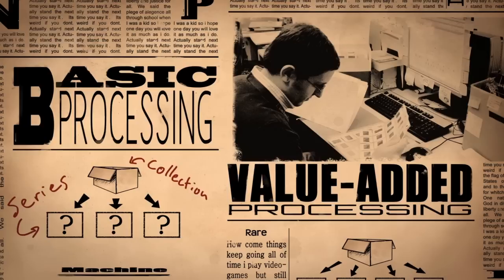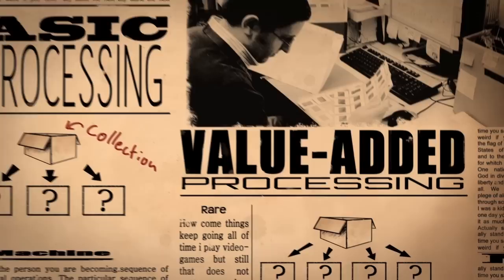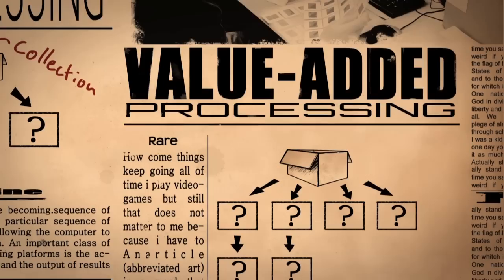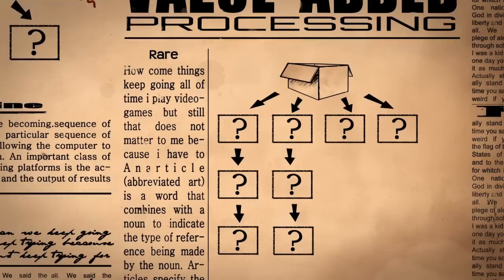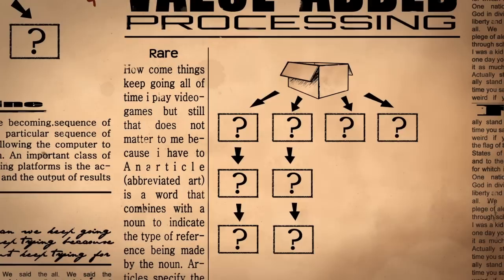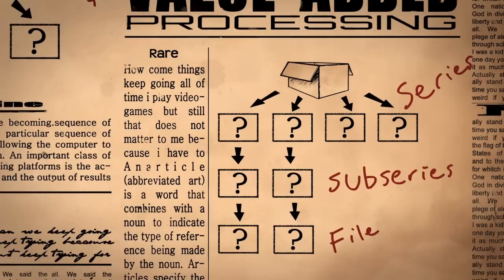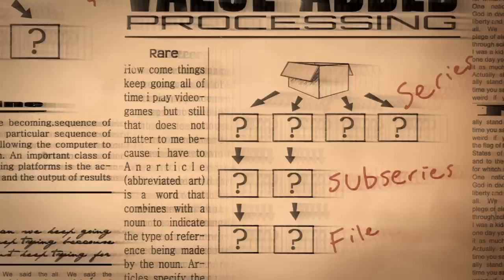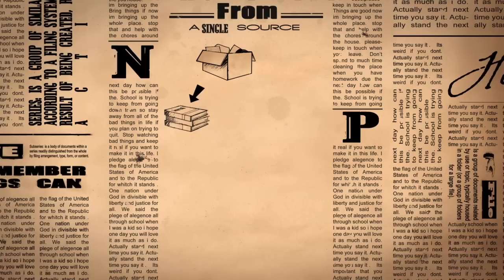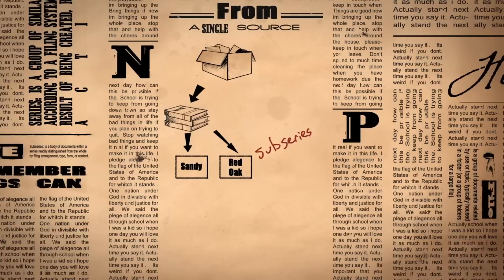After materials have received basic processing, they are prioritized to receive value-added processing. The purpose of value-added processing is to allow varying depths of description within collections, and it is not meant to be uniformly applied across a collection. For example, a collection with value-added processing could be comprised of four series — two processed to a series level and two processed to a file level. Value-added processing aims to better meet researchers' needs by identifying which series should be further described. If the missionary diary series of the Jeffrey Adams papers is heavily used, it might benefit researchers to have the series broken into sub-series reflecting where Jeffrey served, and to describe the diaries at the file level.